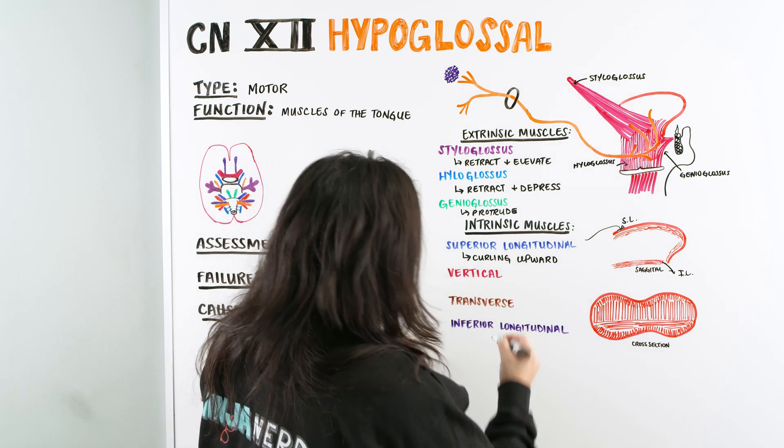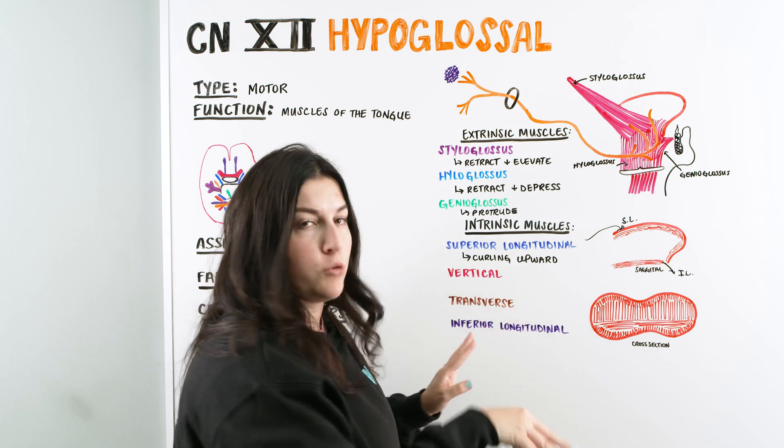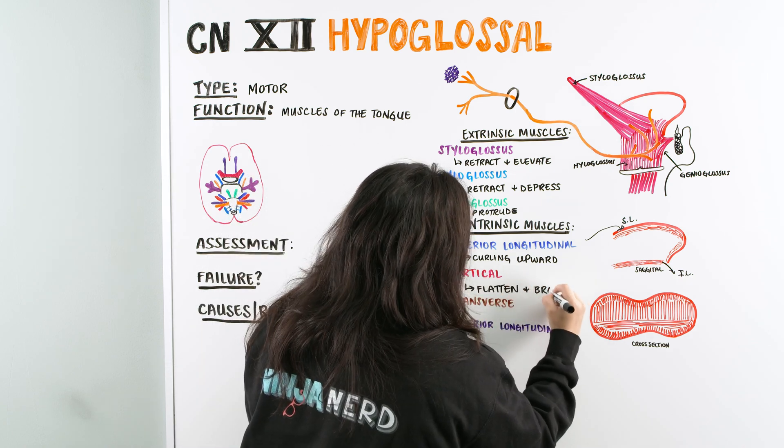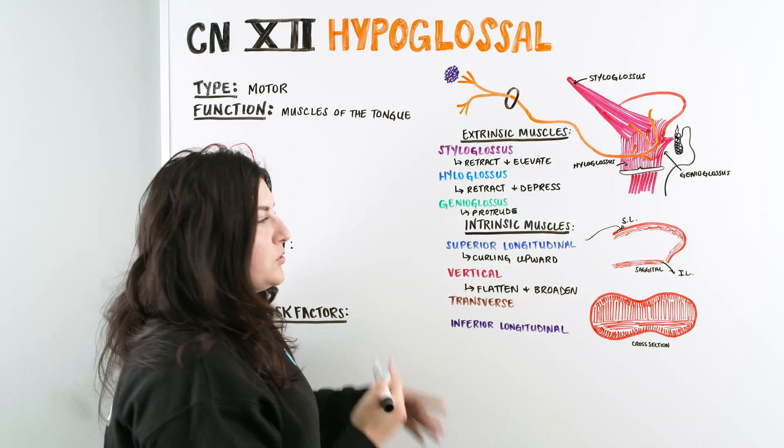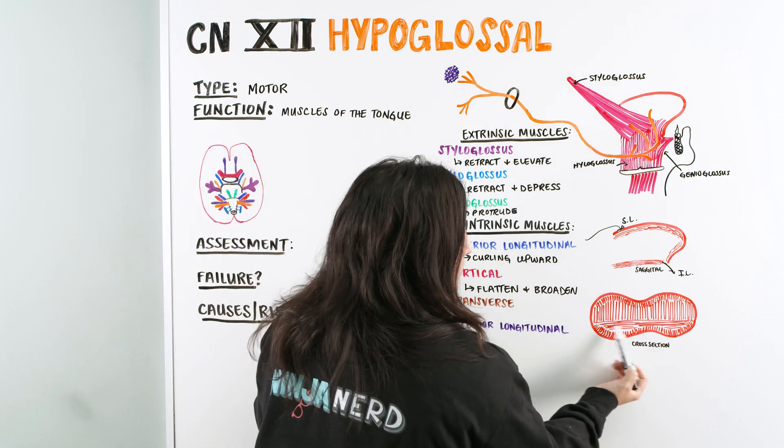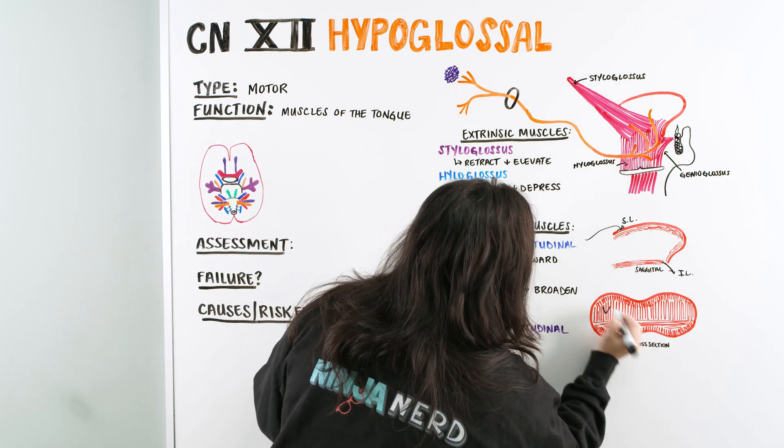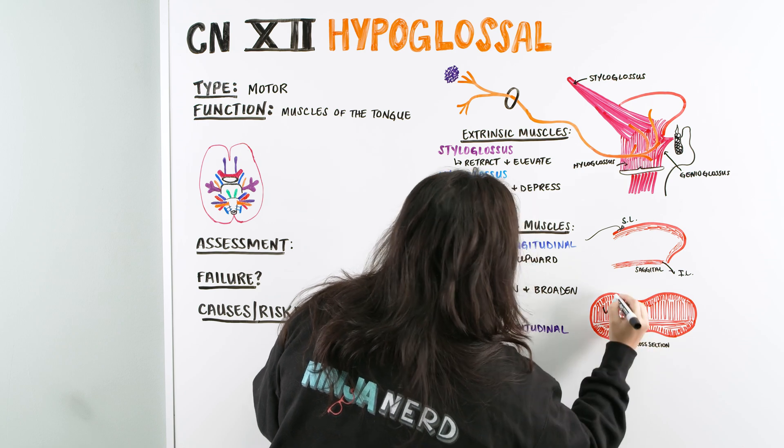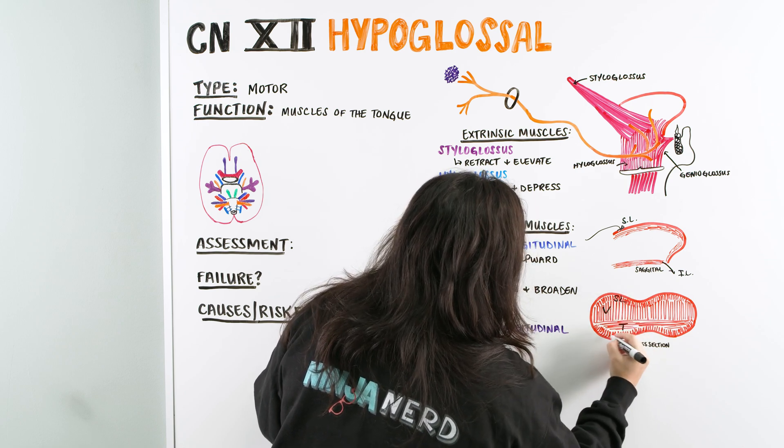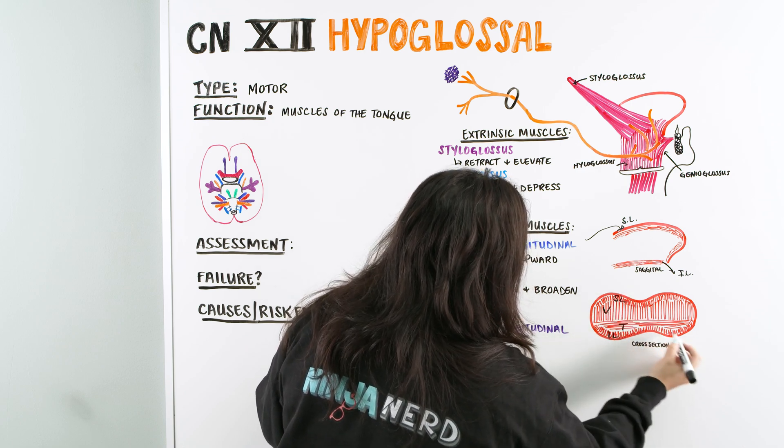Then we have the vertical here. The vertical is going to allow the tongue to flatten and broaden. And then we have the transverse, which is going to do the opposite. The transverse is the one that's going here. This is the vertical, which I can put a V here for vertical. This is our transverse. This is our superior longitudinal. And this is our inferior longitudinal. You can see them noted on here.